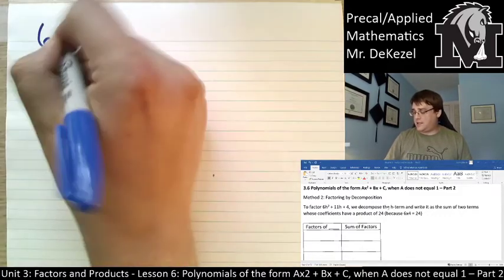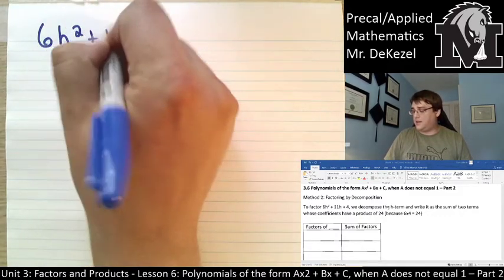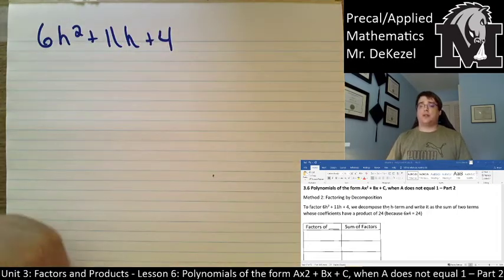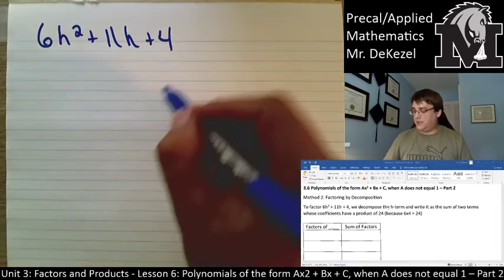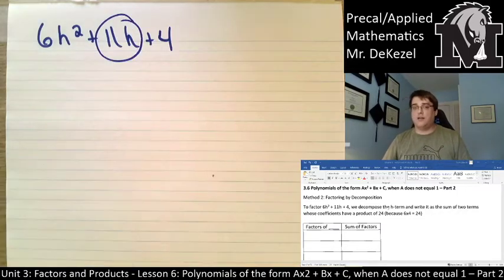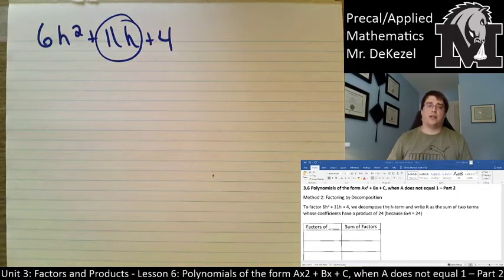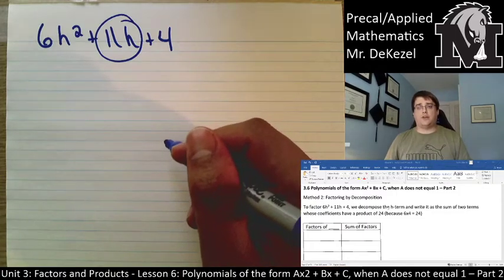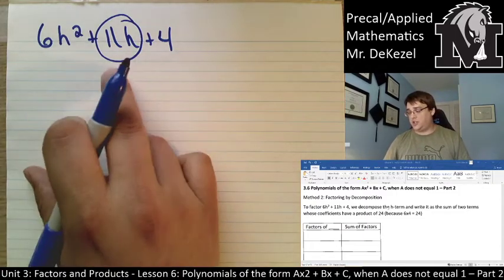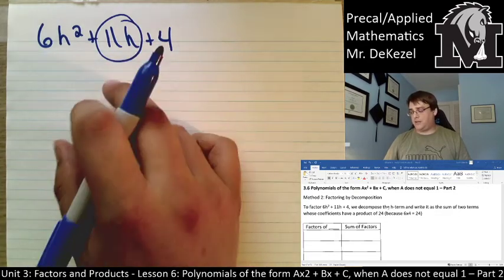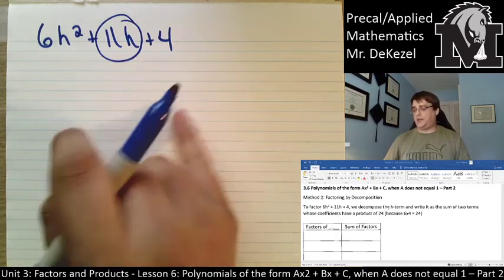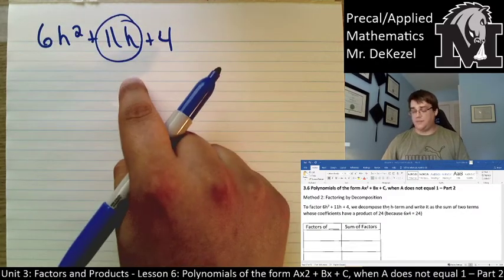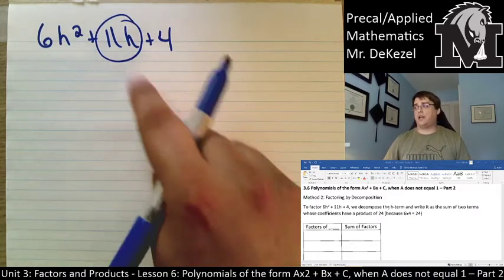So, we're going to factor 6h squared plus 11h plus 4. And what we're going to be doing is we're going to be decomposing this middle term. We are going to break it up into two different parts, and then we are going to work with the equation after it's been broken into those parts. Like you remember, when we multiply two binomials together and then we add the like terms to get this middle term, we're going to be trying to break it up.